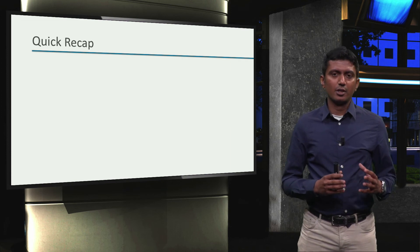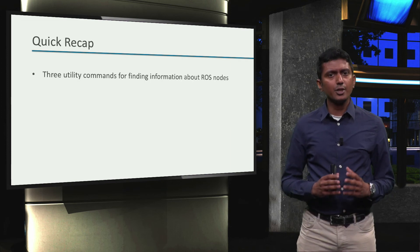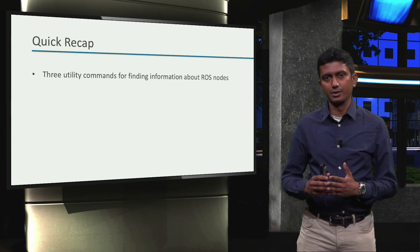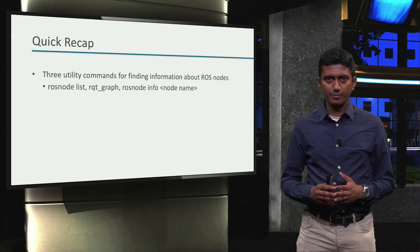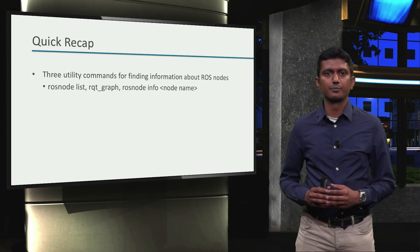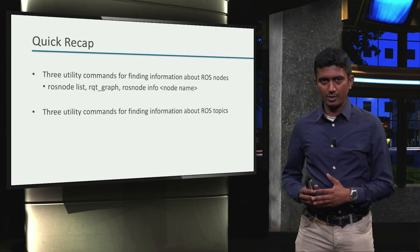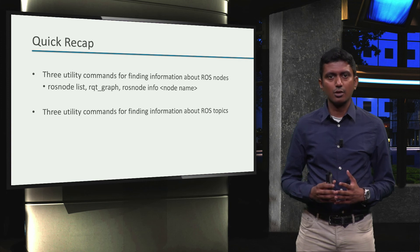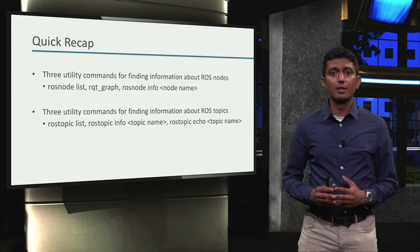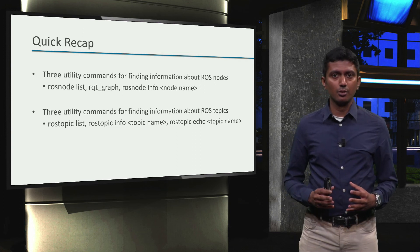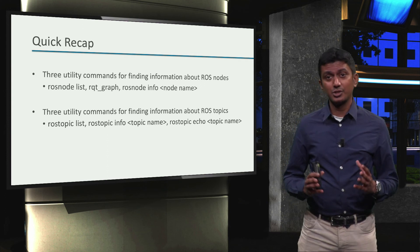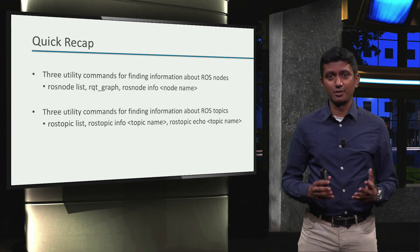A quick recap of what we have learned thus far. Three utility commands to find information regarding nodes once we have started a ROS application: `rosnode list`, `rqt_graph`, and `rosnode info <node_name>`. Then, three more utility commands for finding information on ROS topics: `rostopic list`, `rostopic info <topic_name>`, and `rostopic echo <topic_name>`. For more such utility commands, you can refer to the ROS cheat sheet in the supplementary documents section of the course.